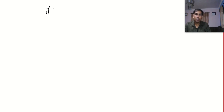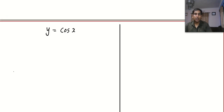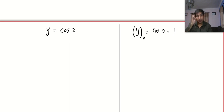The first question is: find the expansion of the function y = cos x. You can follow any notation you like — you can use f(x), but personally I like the second one. So y = cos x. On the other side, we write y at 0, which means the value of the function when x = 0. So cos 0 — if you don't know the value, use a calculator. Cos 0 is 1.